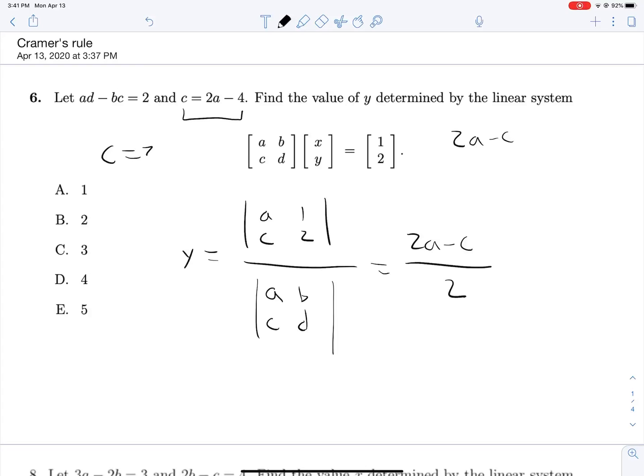So if C is equal to 2A minus 4, then C minus 2A is equal to minus 4, and 2A minus C is equal to 4. So this numerator is just 4 and our answer is 2.